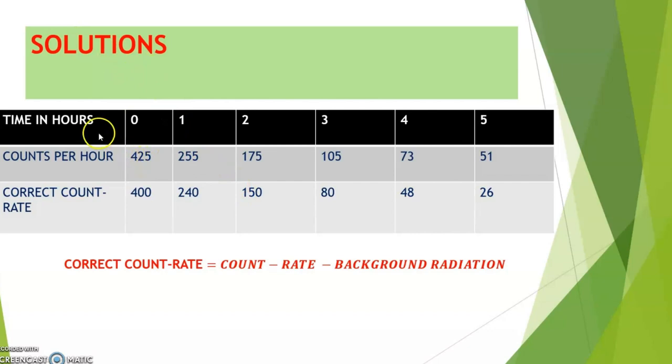Time was actually recorded in hours. It was found that the counts per hour were 425. We need to subtract the 25 count rate per hour, which is the background radiation, from this radiation that was recorded in that particular substance.